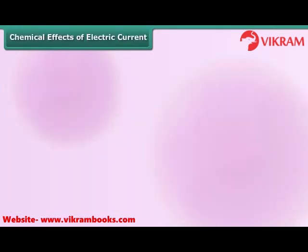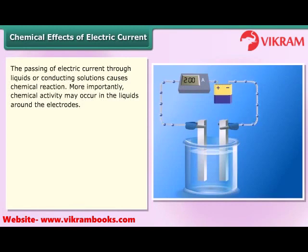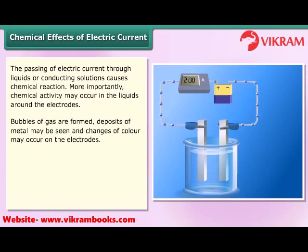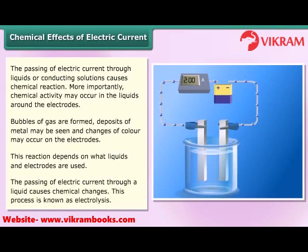The passing of electric current through liquids or conducting solutions causes chemical reactions. Around the electrodes, bubbles of gas may form, deposits of metal may be seen, and changes of color may occur. This reaction depends on what liquids and electrodes are used. The passing of electric current through a liquid causes chemical changes — this process is known as electrolysis.